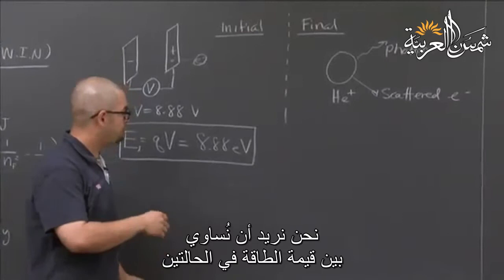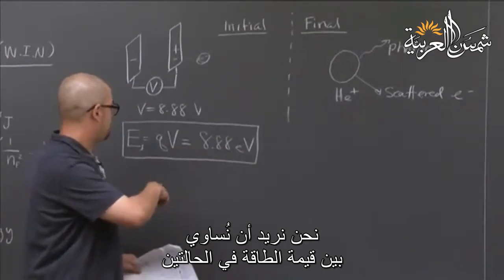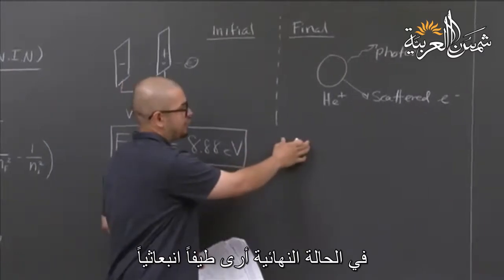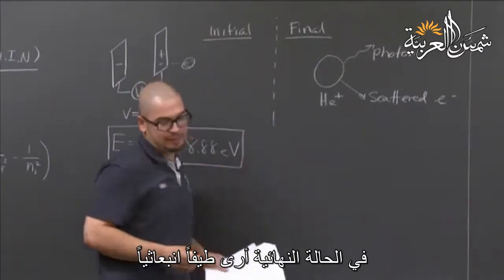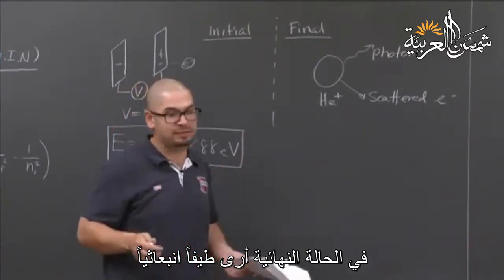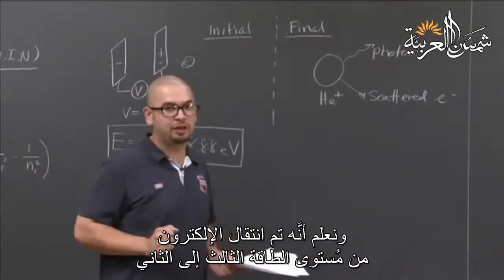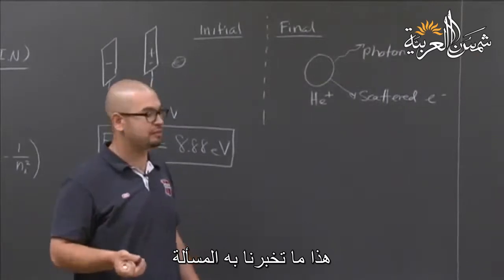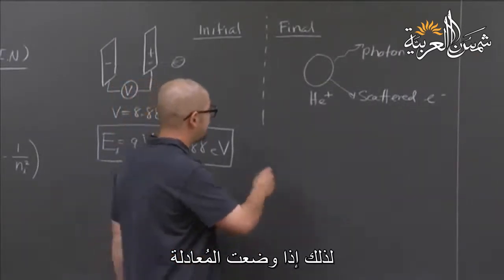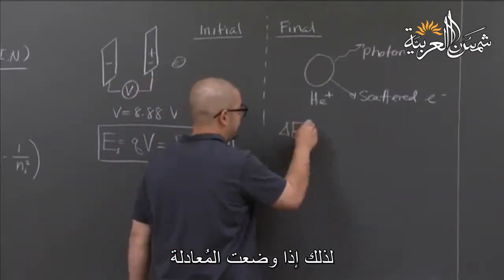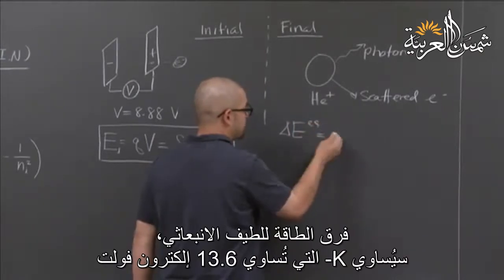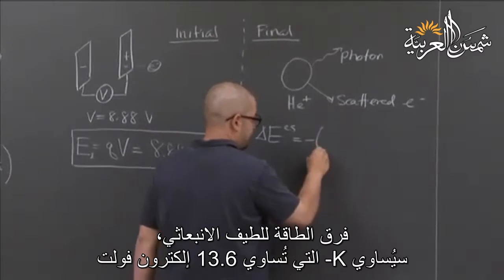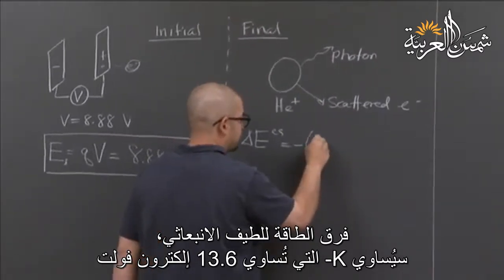If I equate the initial and final states, in my final state I detect an emission spectrum, and I know what the transition is: it goes from N equals 3 to N equals 2 — that's what the problem tells us. So taking my equation for delta E of the emission spectrum, this is simply negative K, which is 13.6 electron volts.